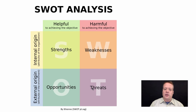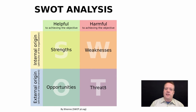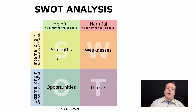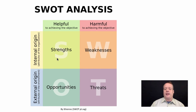Opportunities and threats are things that are external to the company — things that would exist even if the company didn't. Strengths and opportunities are helpful things; weaknesses and threats are negative things. The goal a lot of times is to turn threats into opportunities and weaknesses into strengths. A strength of a company, for instance, might be that you have a committed staff of engineers who are creative and think well about product design, and maybe even have a patent on your product design.